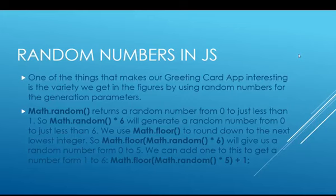I'll use a multiplier to get the range. If I multiply math.random by six, that gives me a low value of zero and a maximum just less than six. Then we have math.floor, which rounds the number down to the next lowest integer. There's also math.ceil — short for ceiling — which rounds up, but we're using the floor method.